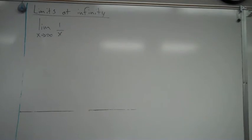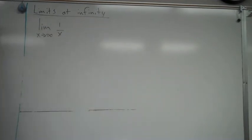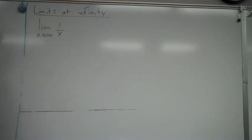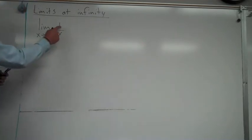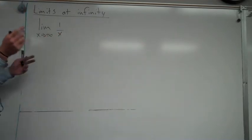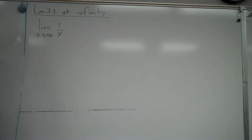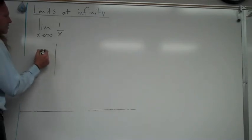We've got to think about this: we have 1 in the numerator and x in the denominator. As x goes to infinity, 1 doesn't change at all because there's no variable there, but x continues to grow bigger and bigger. So this is going to end up being 1 over a billion, 1 over a hundred billion, and so forth. If you're not sure about that, let's look at a chart.